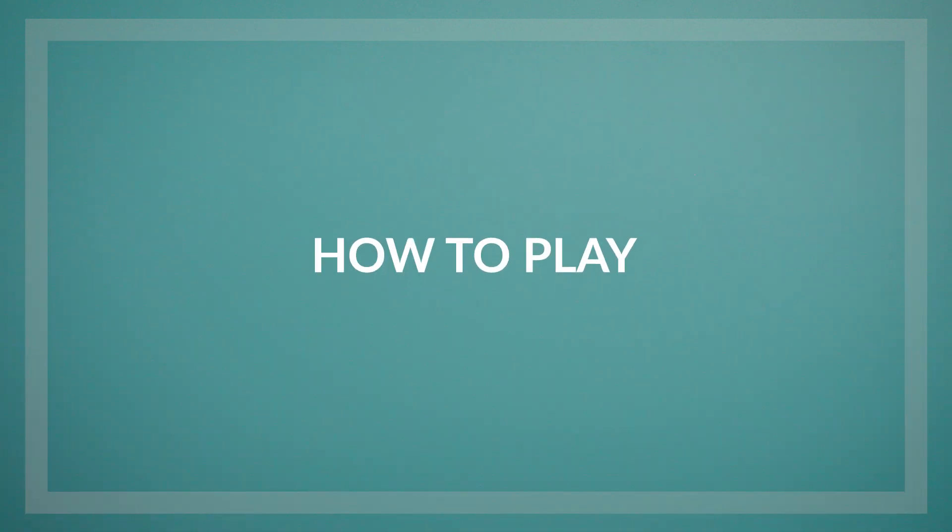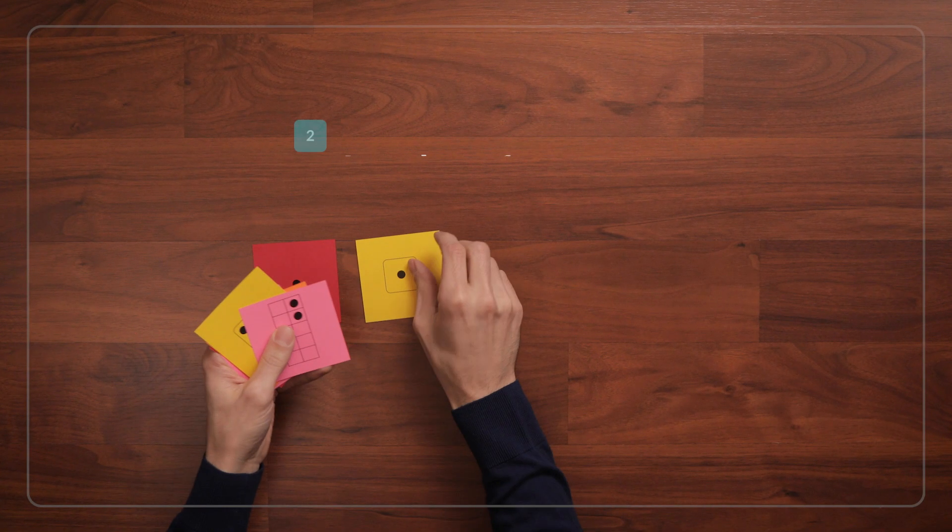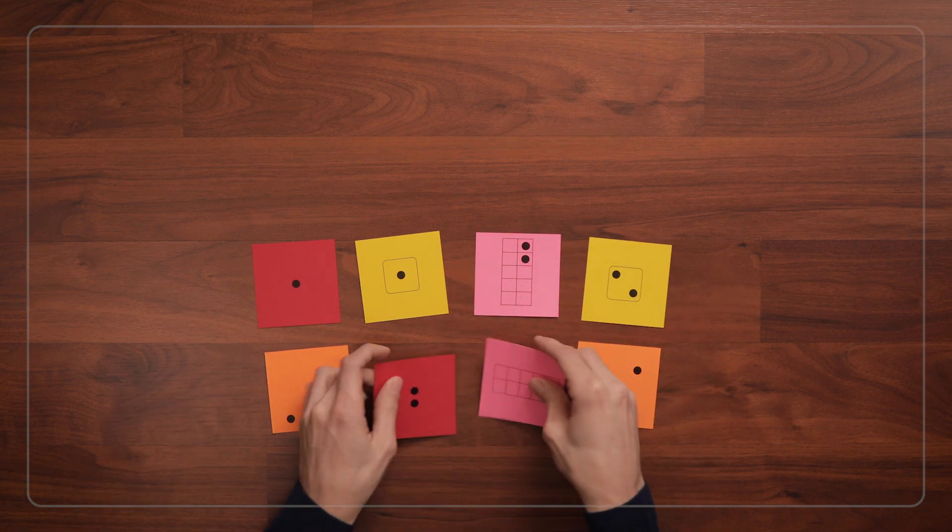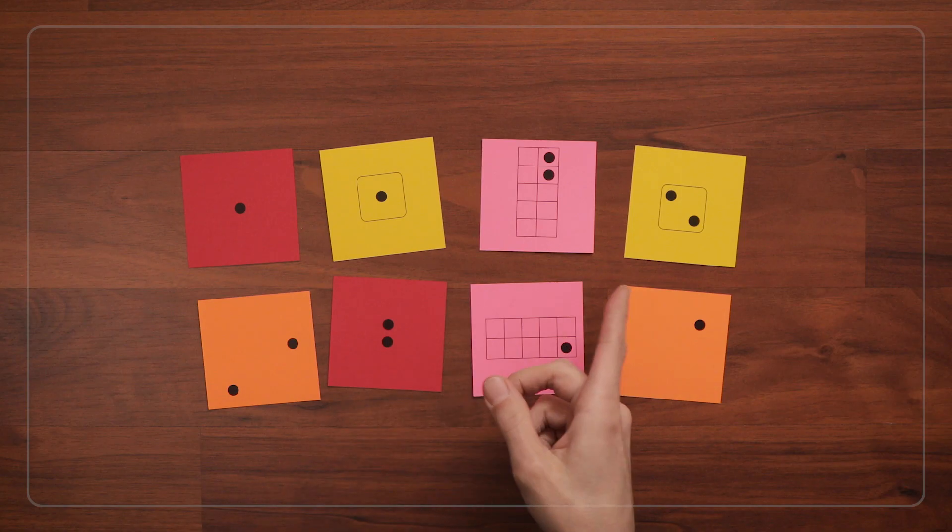So once you have your dot cards, shuffle the cards and lay them face up in any order. Then take a moment to look at and talk about the cards. You can ask questions like, what do you notice about these cards?